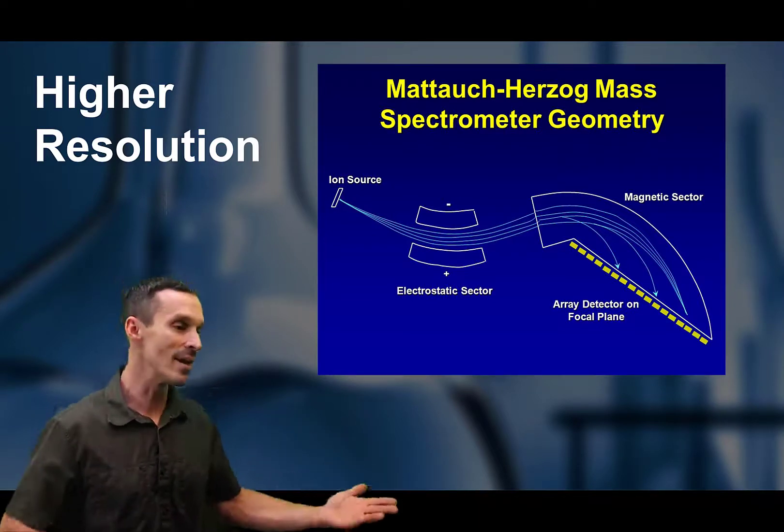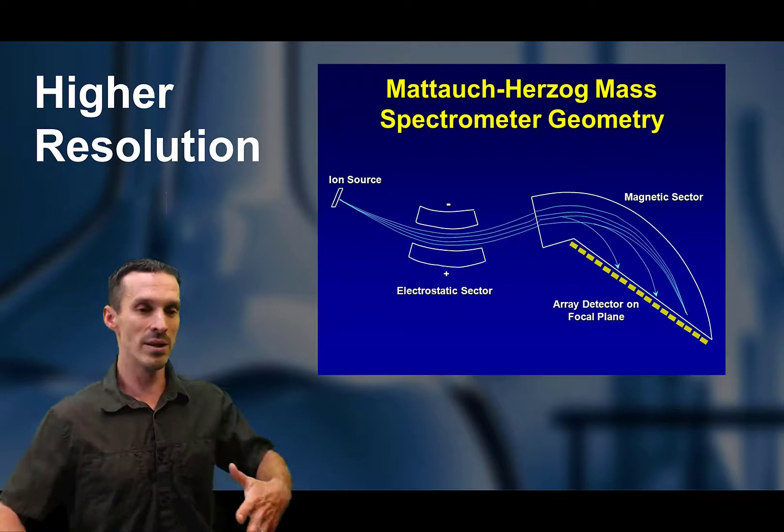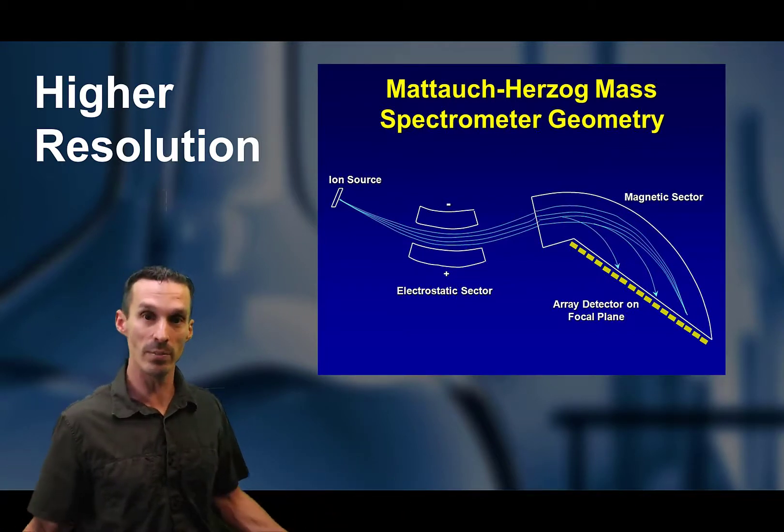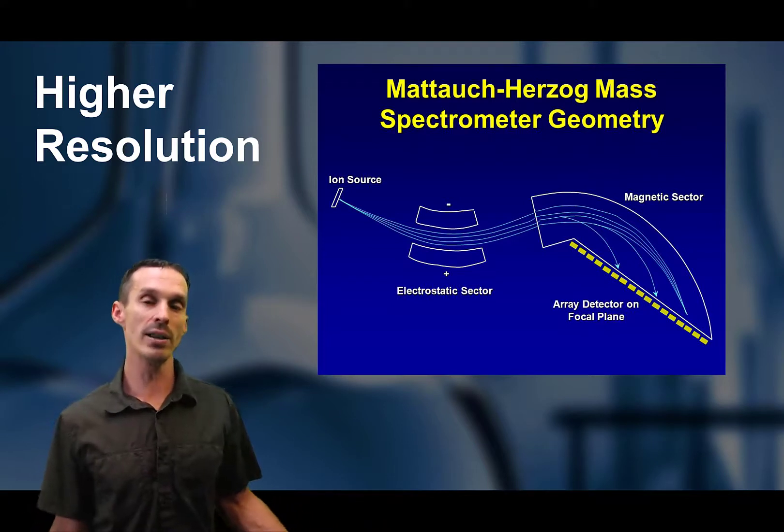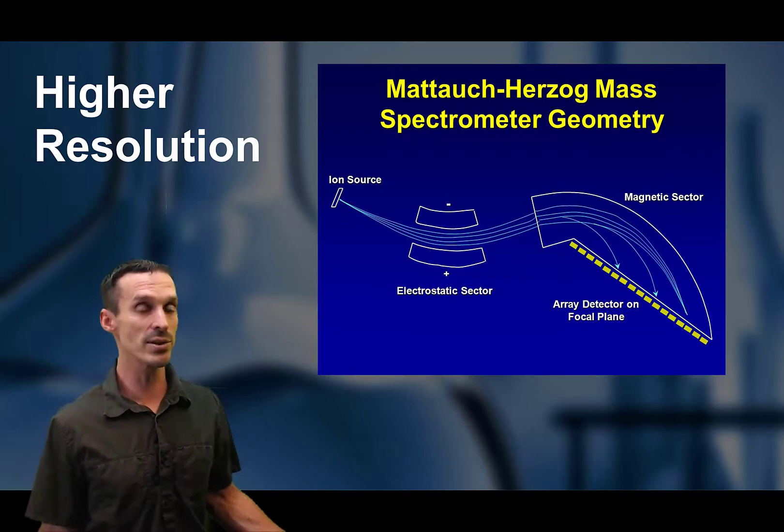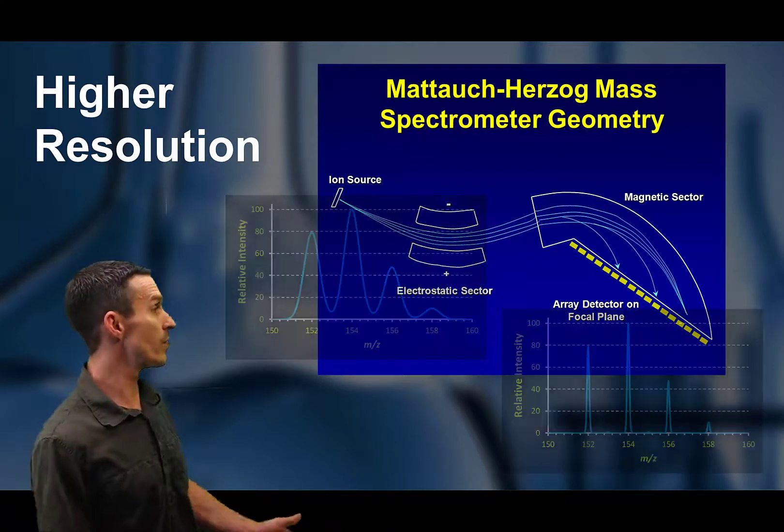Now what you're seeing there is just one example of the different orientations that you can have. And these combinations of magnetic and electrostatic sector, they create very large machines, like the types of mass spectrometers that literally fill up a room. But the goal behind them is to just allow you to improve the focus of the ions.